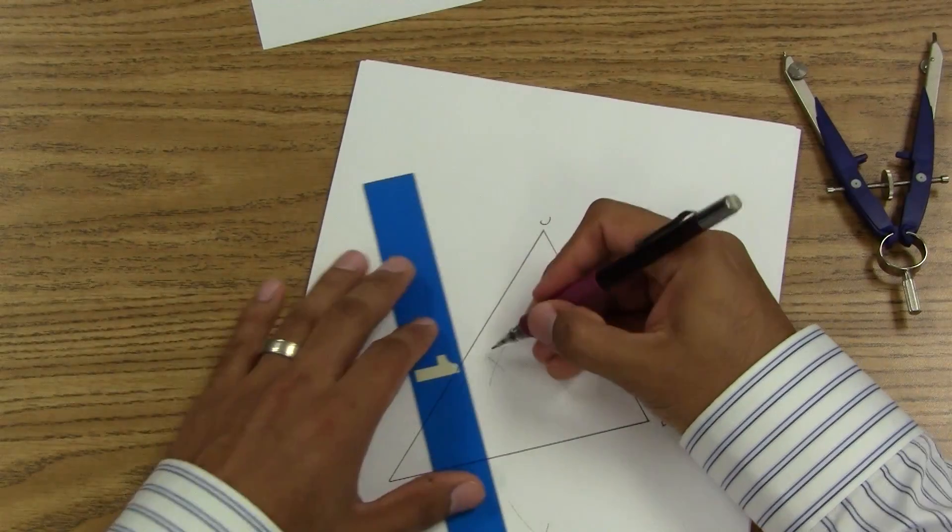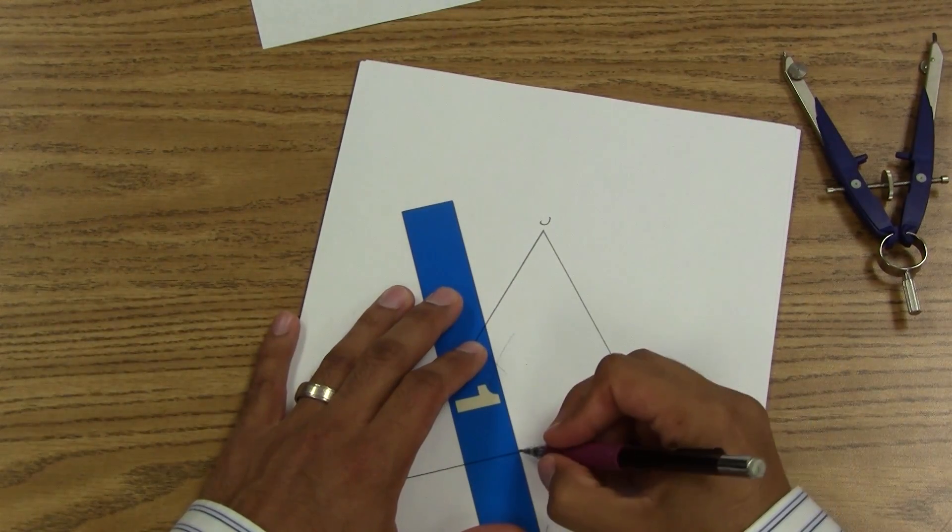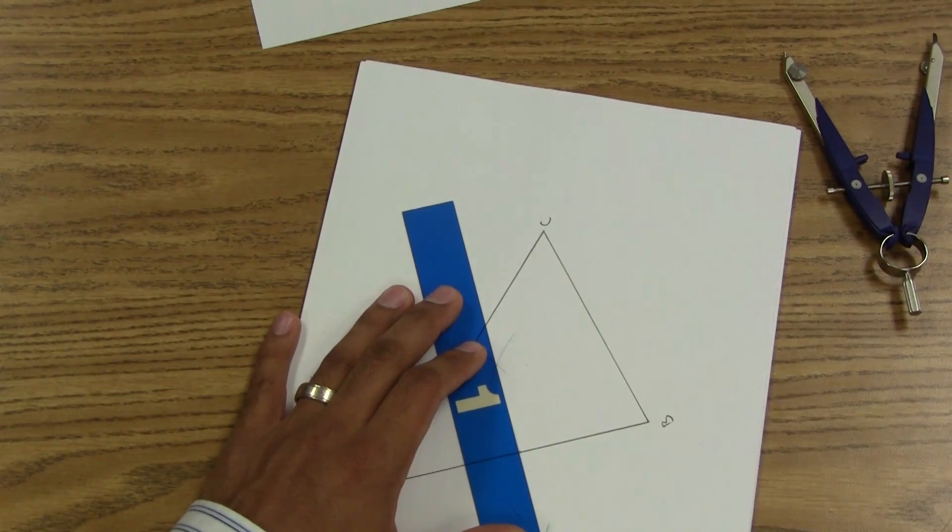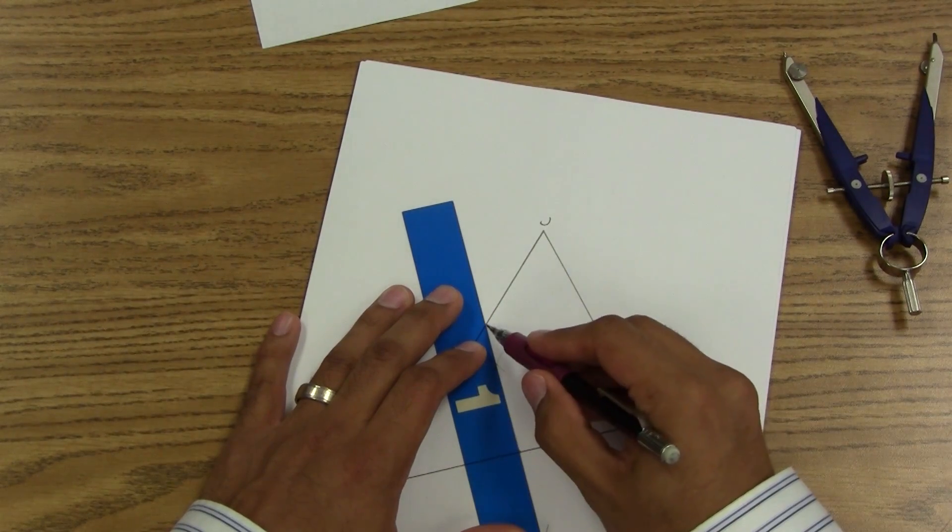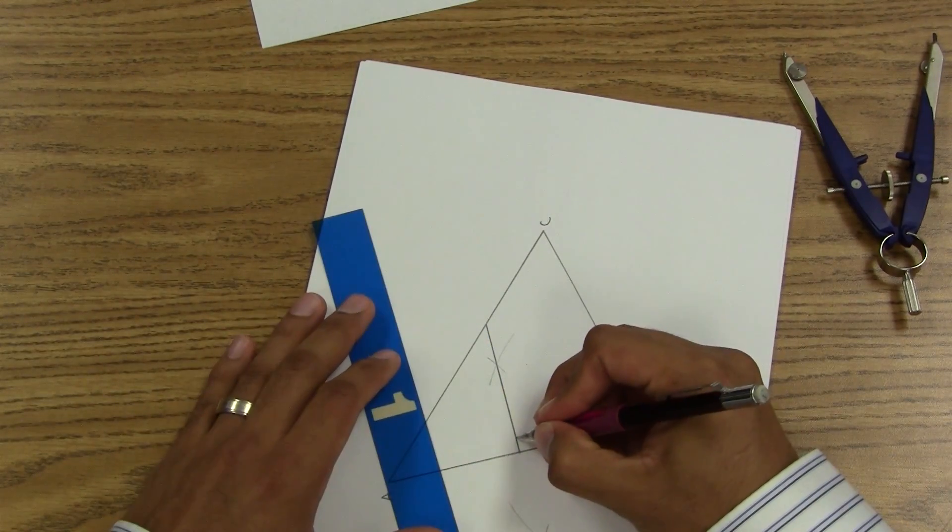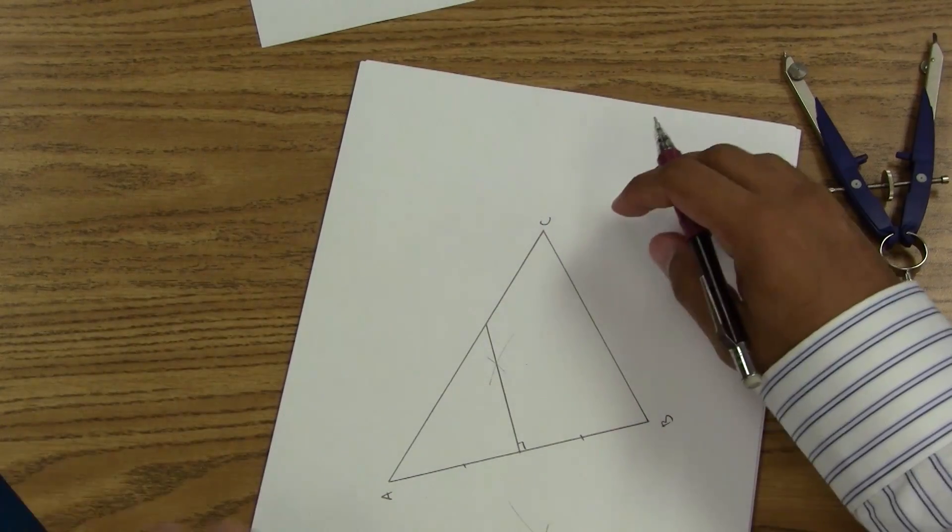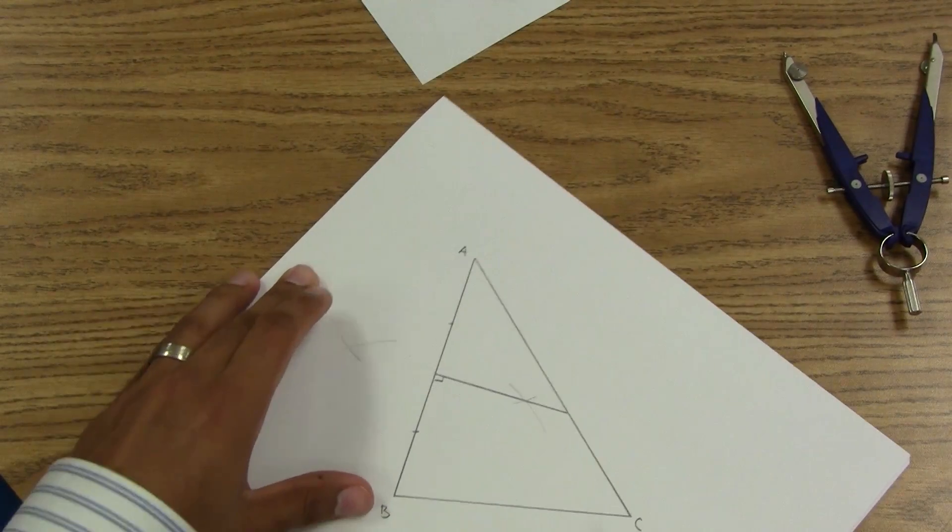So I know that from here to here, if I was just looking for the midpoint, I would just make a point right there. But I'm looking for the perpendicular bisector, so I'll go ahead and connect down and it bisects this side.